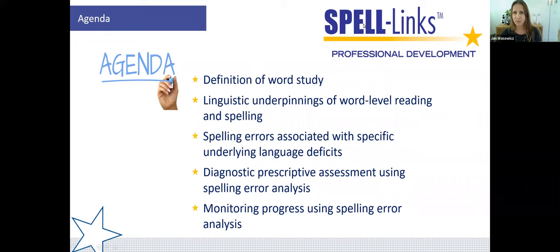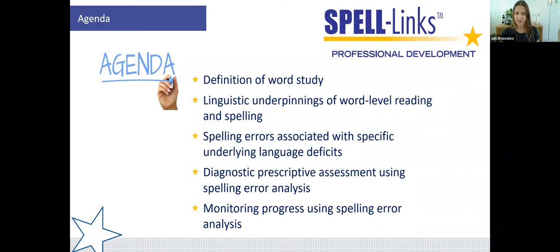Here's our agenda for today. I'll begin with the definition of word study and talk about the linguistic underpinnings of word-level reading and spelling — decoding and encoding words. Once we have that underway, we'll talk about doing spelling error analysis — specifically, spelling errors associated with underlying language deficits and how to use a diagnostic-prescriptive assessment to tailor intervention to a specific student's needs. Finally, I'll wrap up with how to use spelling error analysis to monitor progress over time.